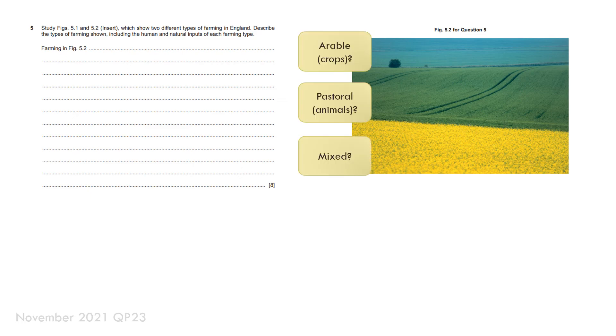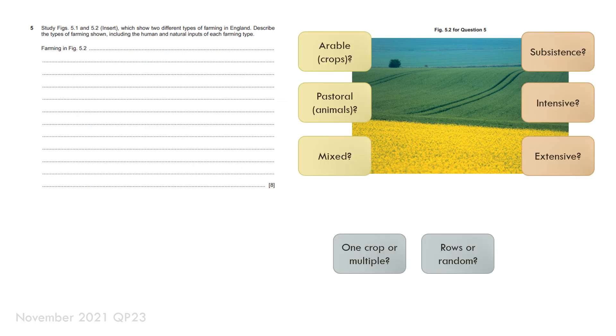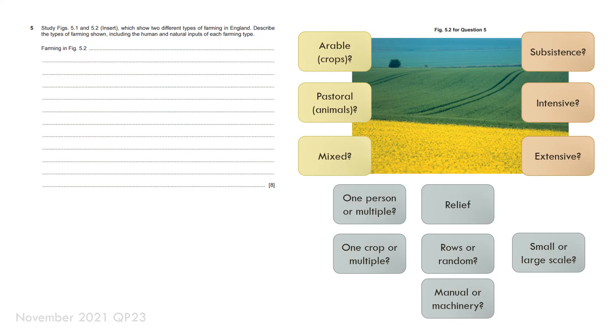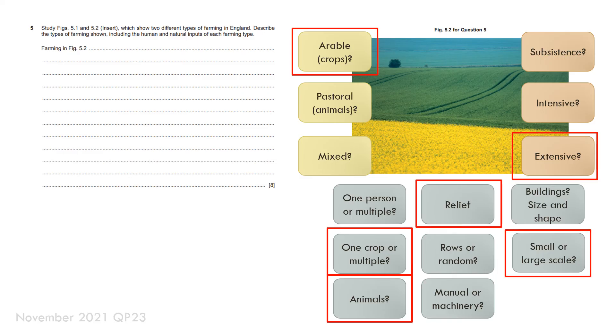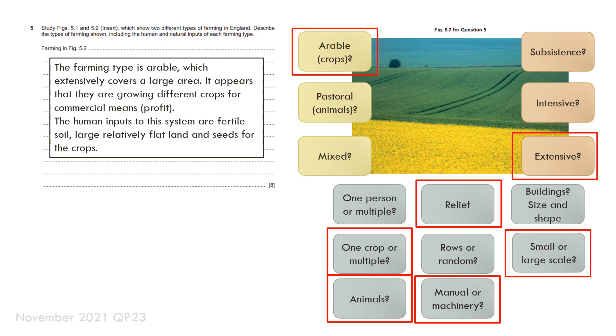Other things to consider are again going through the motions. You can see here considering all of these things at once we can see it's arable. Definitely extensive huge fields two crops, no animals, definitely large scale and probably evidence of some machinery. We can say the farming type is arable which extensively covers a large area. It appears they are growing different crops for commercial means. The human inputs into the system are fertile soil large relatively flat land and seeds for the crops and you could also put some machinery as well because you can see the lines put into the ground.